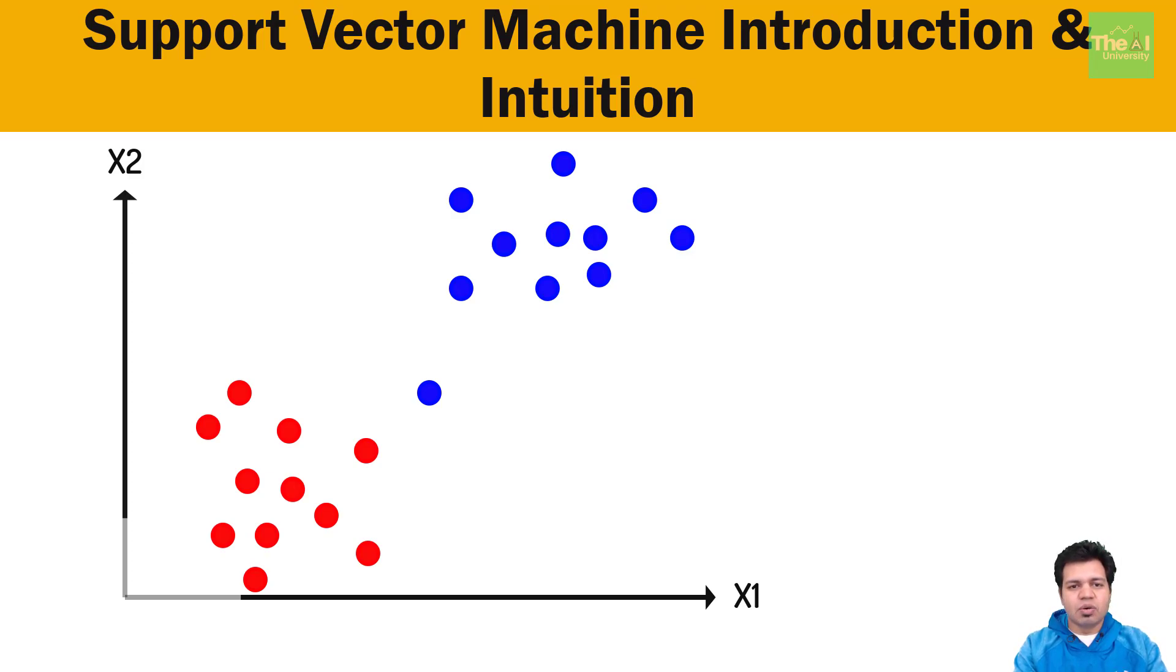The intent here is to find out a line using which we can classify a new data point in future which has not been classified yet. This line helps in finding out whether this new data point will fall in red class or blue class. Let's see how can we separate these two classes.